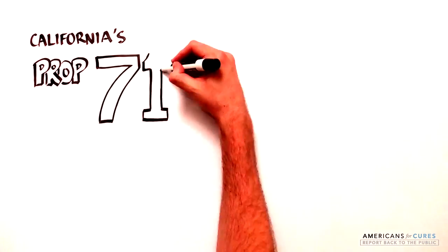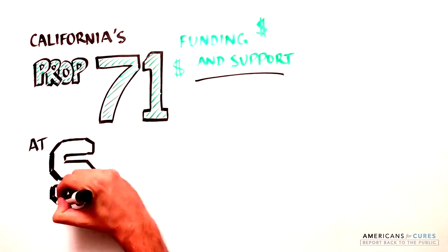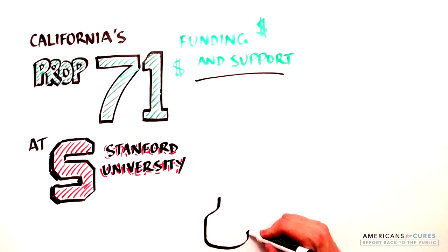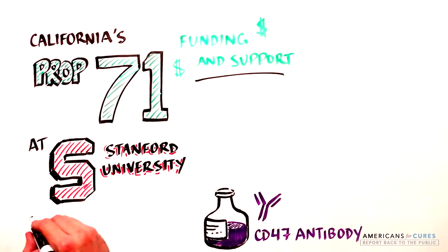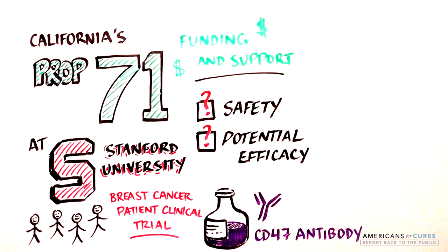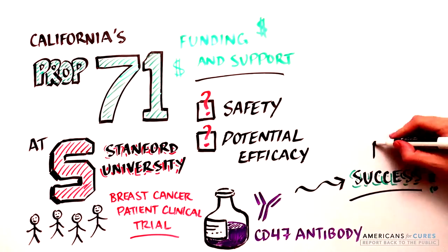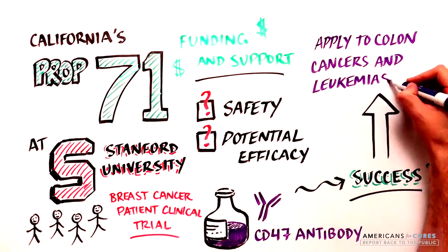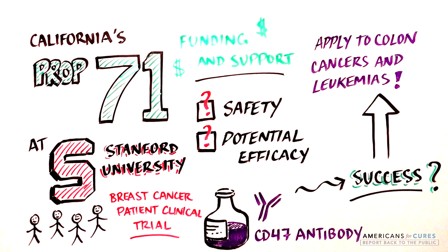Thanks to funding from Proposition 71, scientists at Stanford University are now testing the CD47 antibody for safety and potential efficacy in a human clinical trial of breast cancer patients. This approach could be applied to many other cancers, such as certain types of colon cancers and leukemias.